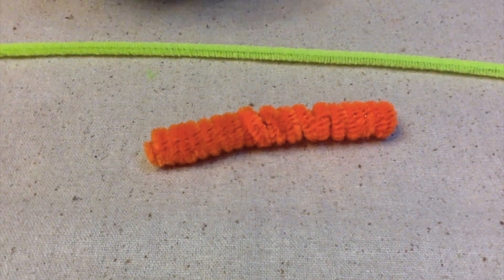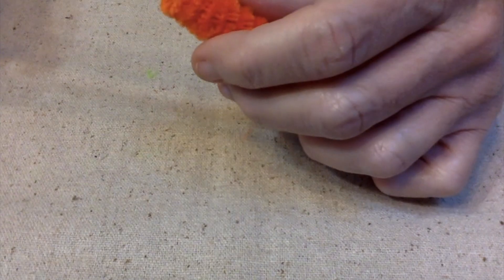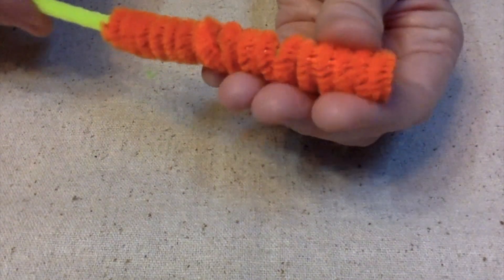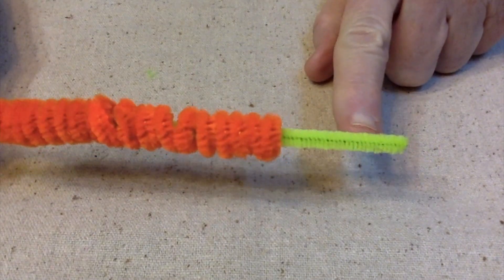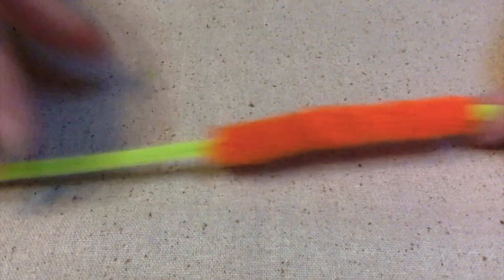Then you take your green pipe cleaner, and you're going to put it all the way through the center. And I'm going to leave just a little bit sticking out, and you have a long end.